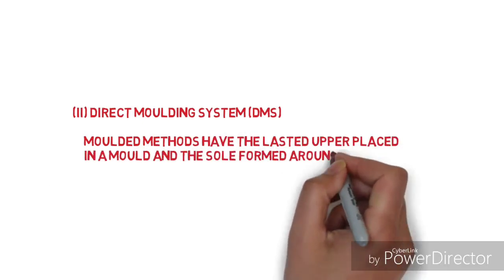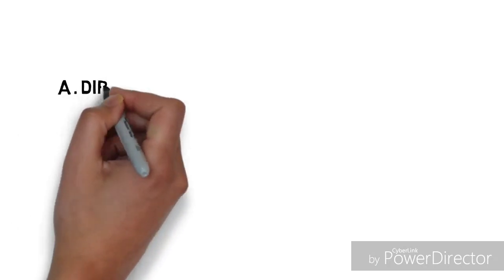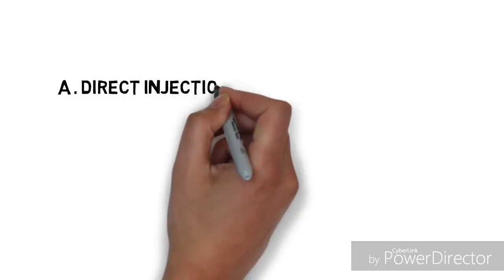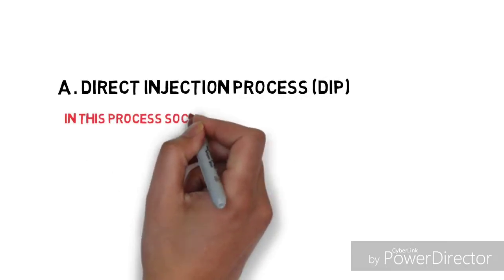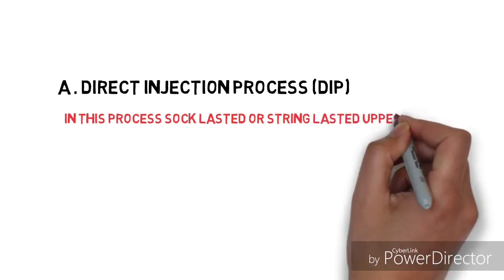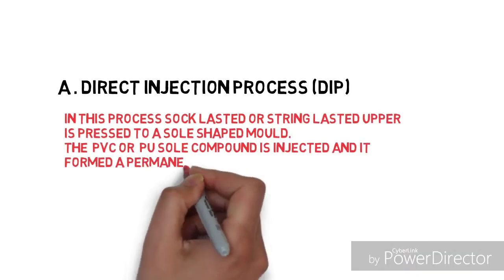Direct injection process (DIP): In DIP, the sock lasted or string lasted upper is pressed to a sole shaped mold where the PVC and PU sole compounds are injected, forming a permanent bond with the upper.